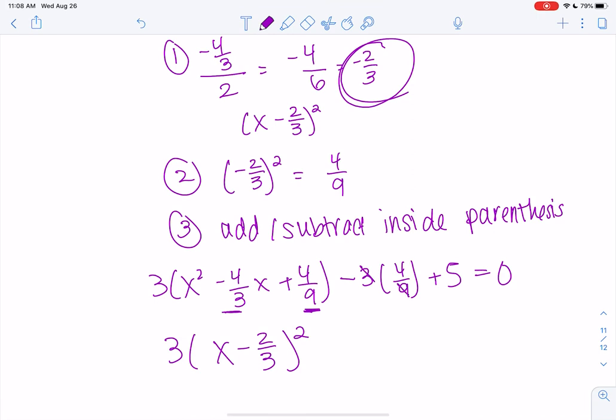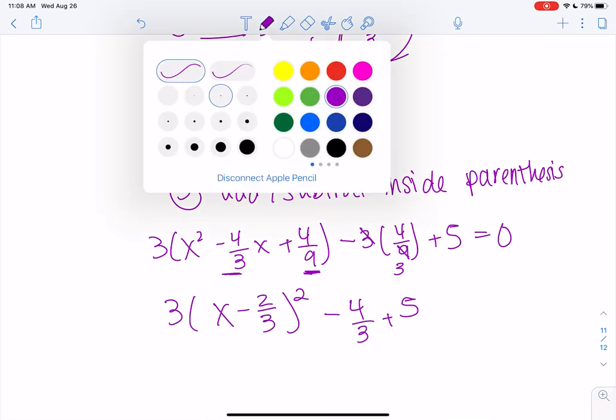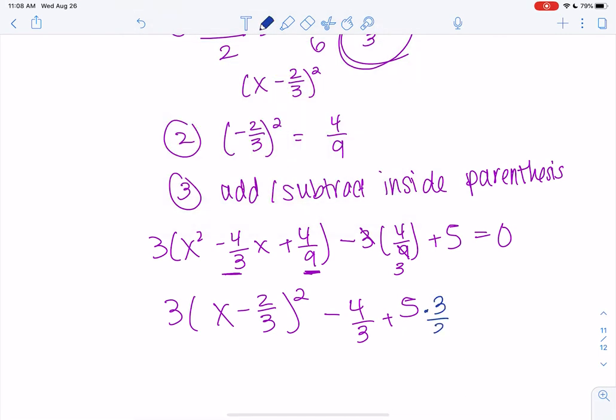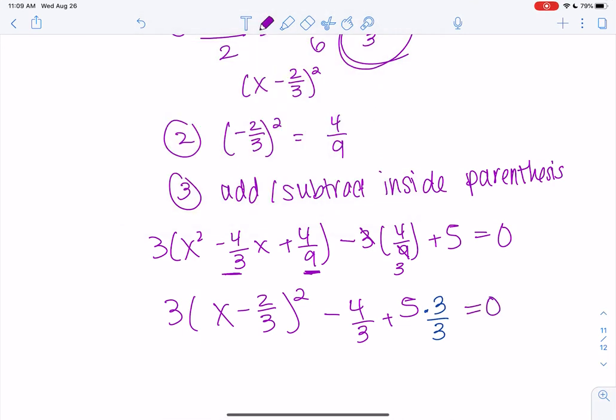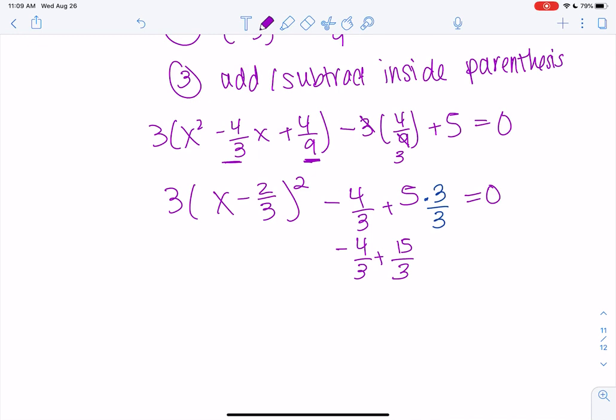And then we'll just simplify the rest. 3 times 4/9 would give me 4/3 plus 5. Let's just go ahead and simplify that. So 5 would be times 3 over 3. So we get negative 4/3 plus 15/3. So that would be 11/3. So 3 x minus 2/3 squared plus 11/3 equals 0. So again, this could be used for solving for x. In this current chapter, 2.4, we're going to use it to find the vertex. So when we get into 2.4, we'll see the use. Hopefully this helped us review completing the square.